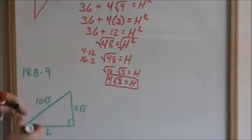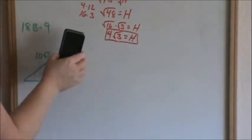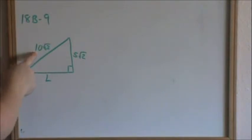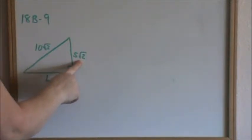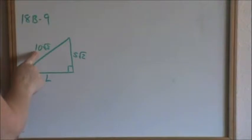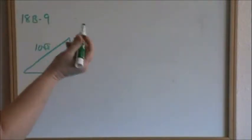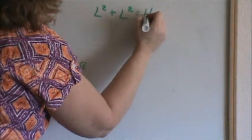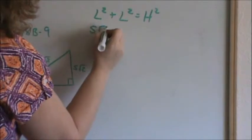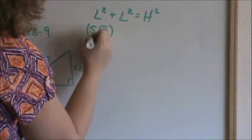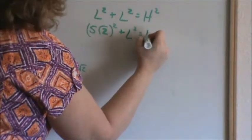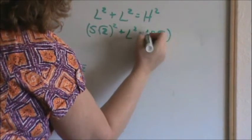Going on to 18B number 9. On 18B number 9, we are given one leg as 5 square root of 2. We don't know the other leg, but we do know the hypotenuse is 10 times square root of 3. It's a right triangle, so we can use Pythagorean Theorem. Put in 5 square root of 2 for our leg — I recommend using parentheses. I don't know the other leg, and the hypotenuse is 10 times square root of 3, squared.